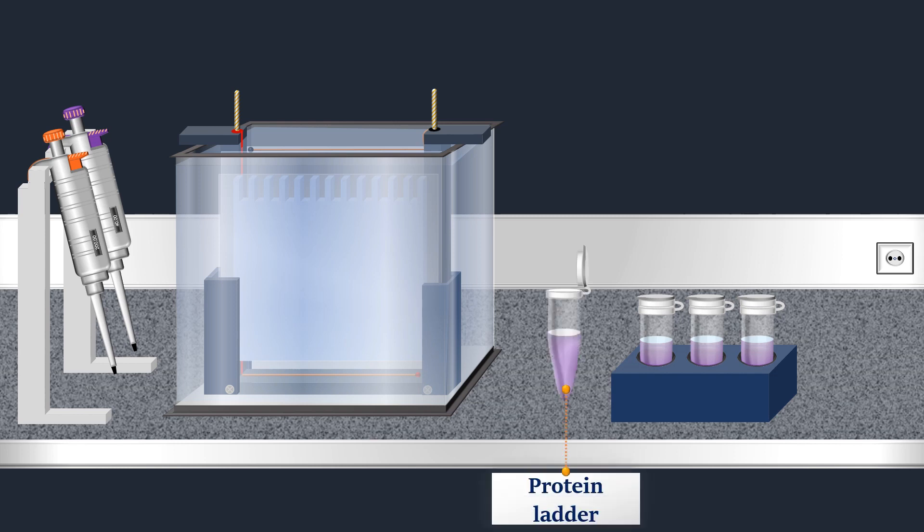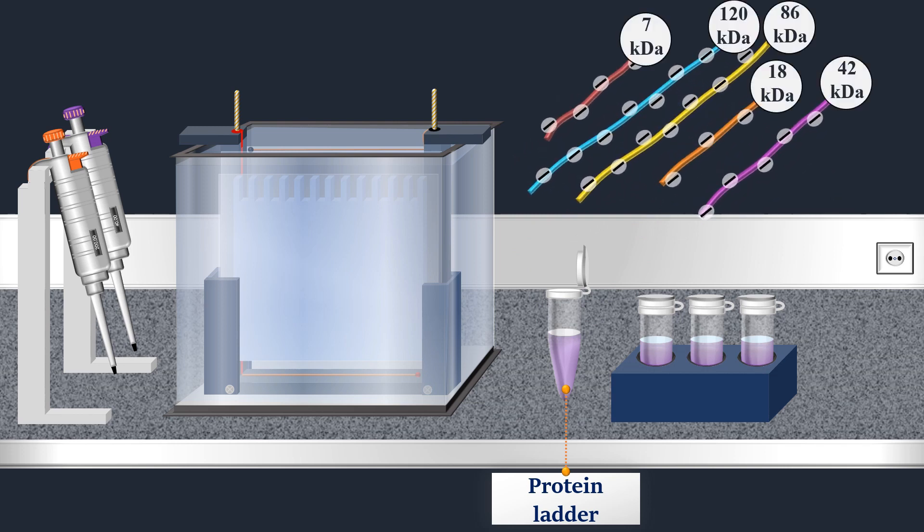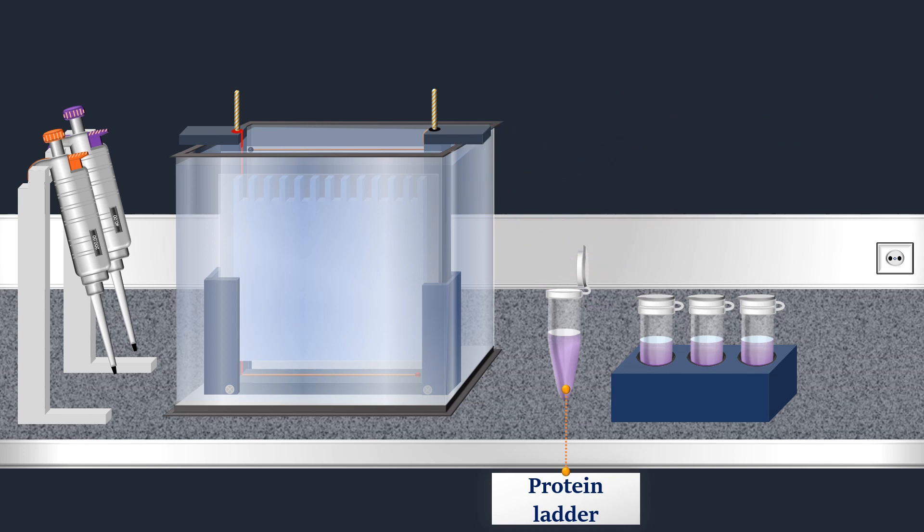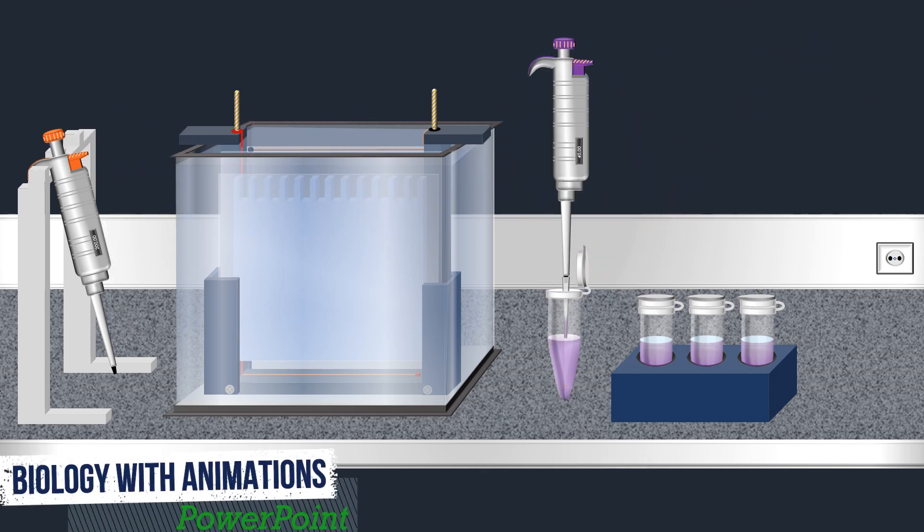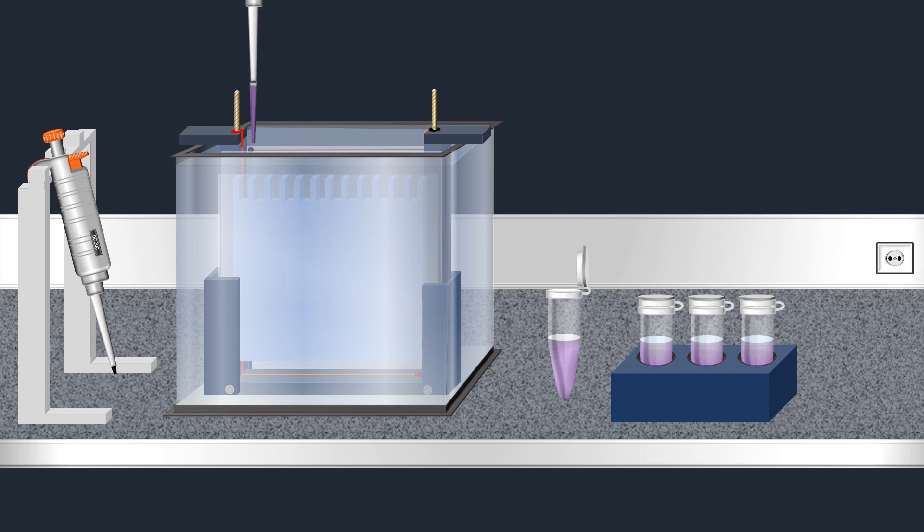For sample application, in addition to the samples, a molecular weight size marker is usually loaded onto the gel. This consists of proteins of known sizes and thereby allows the estimation of the sizes of the proteins in the actual samples, which migrate in parallel in different tracks of the gel. Each sample is pipetted into its own well in the gel.